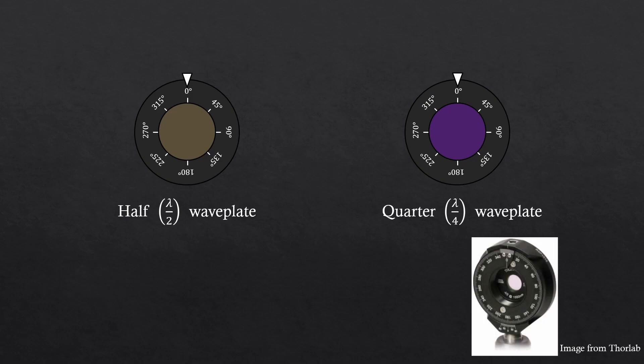And this is the example of an actual image. So we can rotate this either in the clockwise or the counterclockwise direction. And waveplates are also called wave retarders.